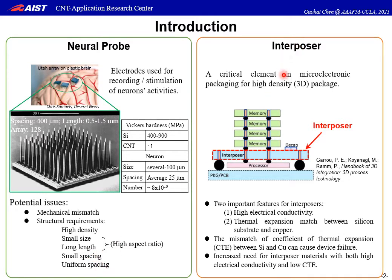The interposer is a critical component in microelectronic packaging for high-density 3D packaging. It is used to bridge between stacked components from fine-pitch I/O contacts to the coarse-pitch package and substrate. A Thru-Silicon-Via interposer is the most common type, using silicon as substrate and copper as the fill material for high electrical conductivity pathways. Two important features for interposers are high electrical conductivity and thermal expansion matching between silicon substrate and copper. With devices becoming smaller, reliability can be significantly affected by the CTE mismatch between silicon and copper.